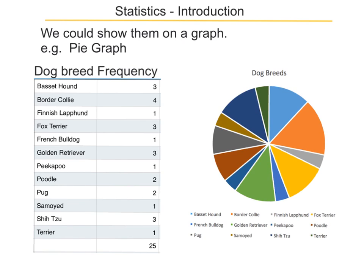Another sort of graph is called a pie graph. A pie graph is great for showing what proportion of each breed there is. You can see straight away that this orange one, which is Border Collie, is the biggest.